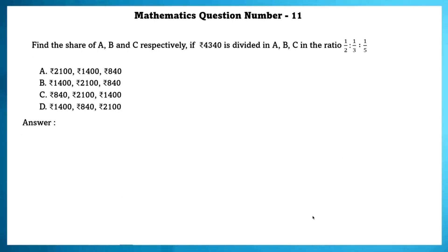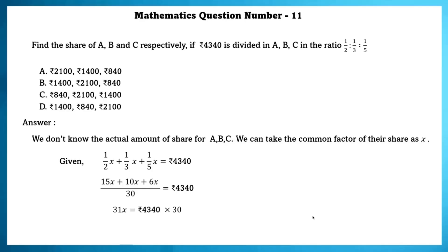Mathematics question number 11. Find the share of A, B and C respectively if 4340 is divided into ABC in the ratio of 1 by 2 is to 1 by 3 is to 1 by 5. We don't know the actual amount of the share for A, B and C. We can take the common factor of their share as X. Given 1 by 2x plus 1 by 3x plus 1 by 5x is equal to 4340 which by taking LCM we can simplify and get the value of X that is 4200 rupees.